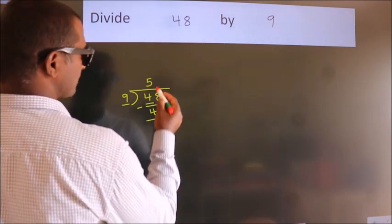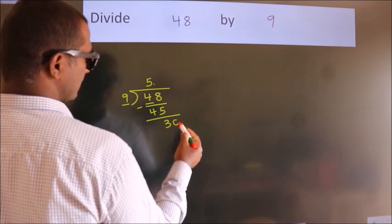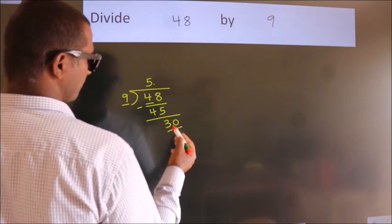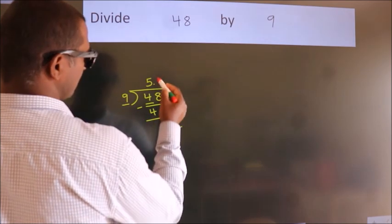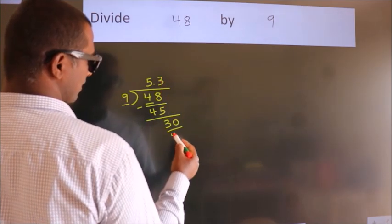So, what we do is, we put a dot and take 0. So, 30. A number close to 30 in the 9 table is 9 threes, 27.